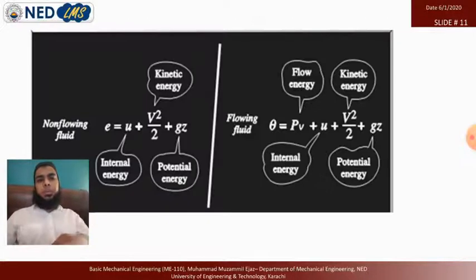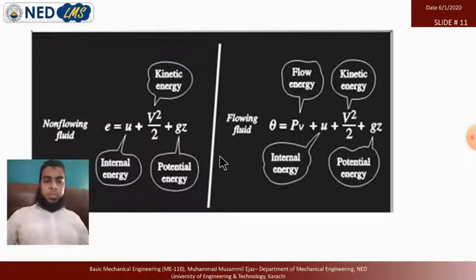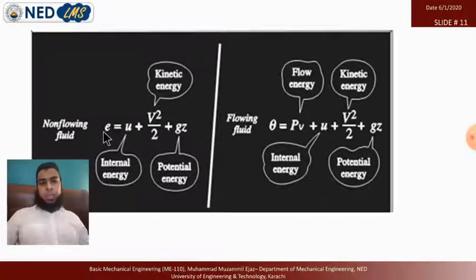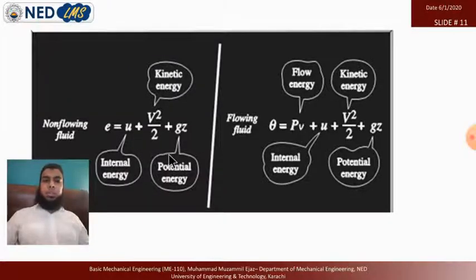From the diagram, you can differentiate between non-flowing and flowing fluid energy. For a non-flowing fluid, total specific energy e equals u plus V²/2 plus gz — internal, kinetic, and potential energy. For a flowing fluid, one additional term is added: flow energy PV. So the total specific energy becomes h plus V²/2 plus gz, where h equals u plus Pv.